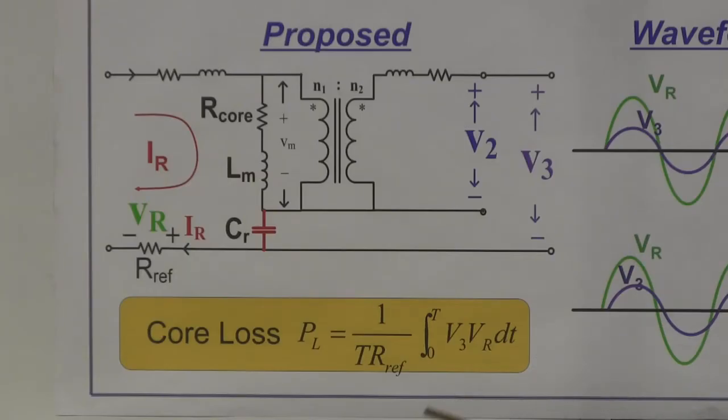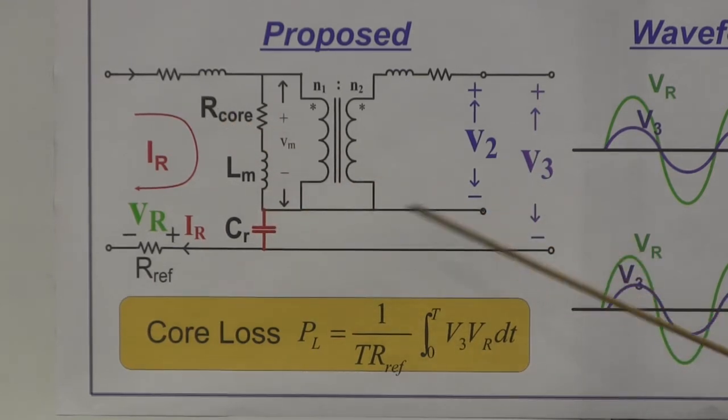So we propose a new method to overcome this drawback. The difference is that we connect a resonant capacitor in series on the primary side. Now we measure a new voltage, V3. V3 is essentially the total voltage of this R-LC branch. If we fine-tune the capacitor value to make it resonant with Lm, these two voltages will cancel out, leaving only R-core. So V3 will be only the voltage on R-core.